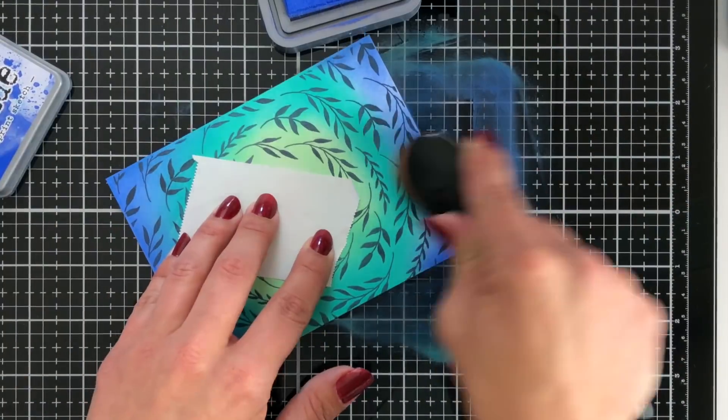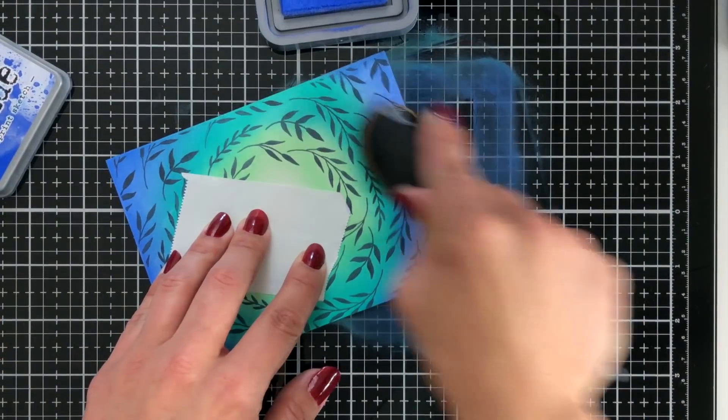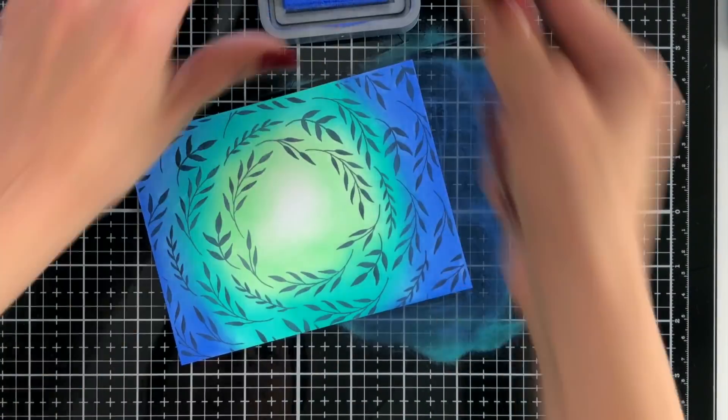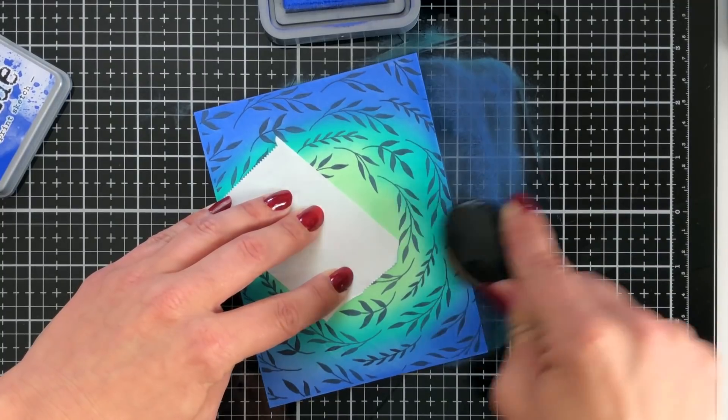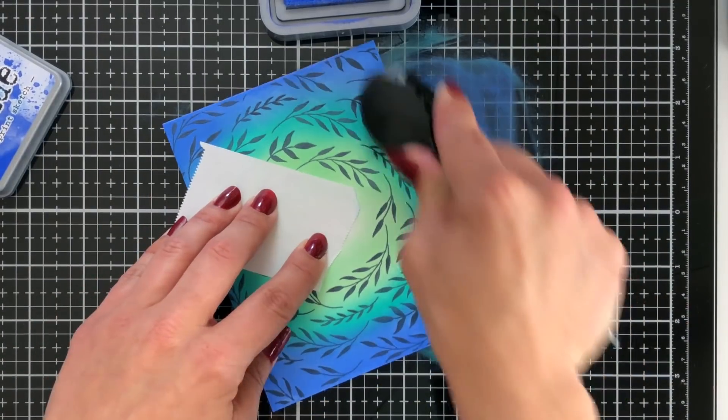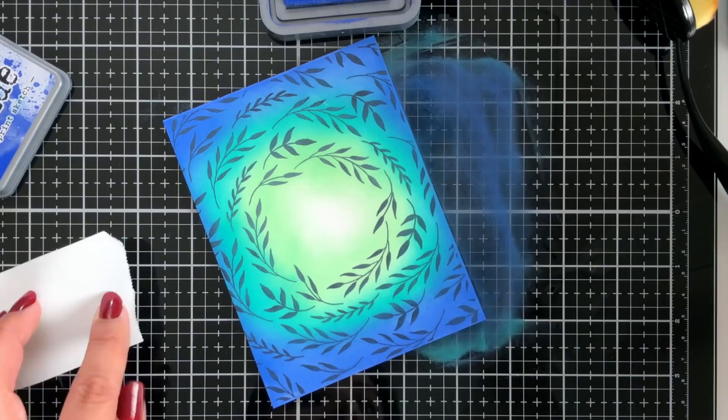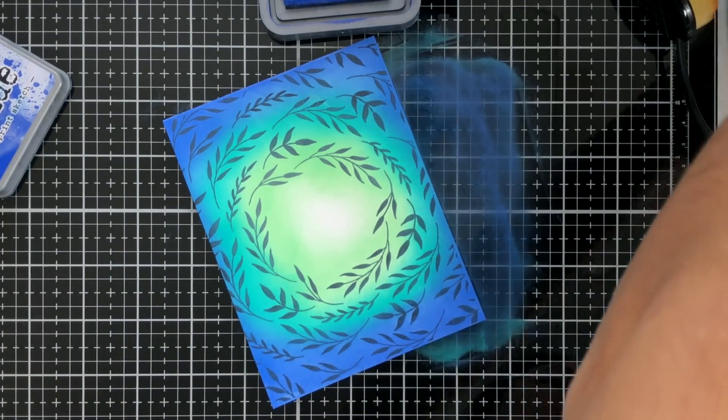So now you can see I did grab some post-it tape. That's helping protect my fingertips and my card panel because you could transfer some of your oils from your fingers and get fingerprints all over your background. So that's protecting my fingertips and my background.